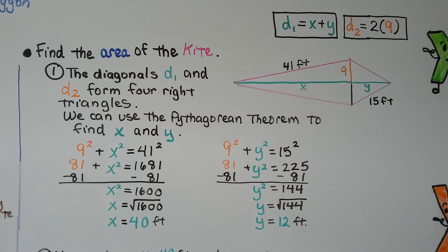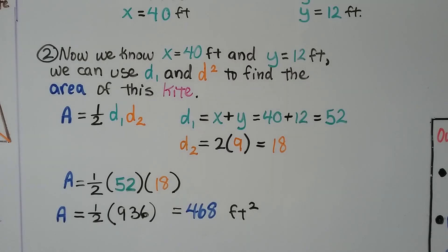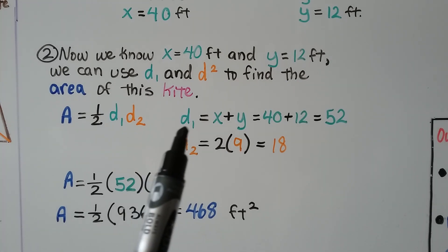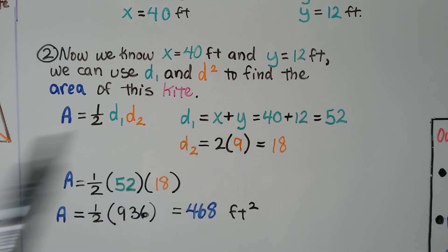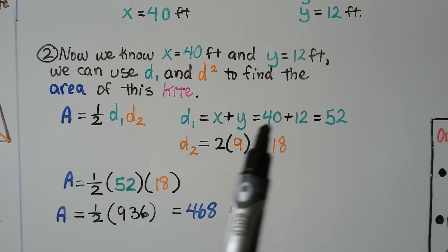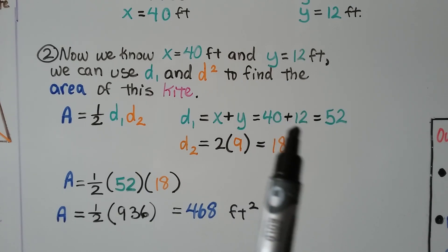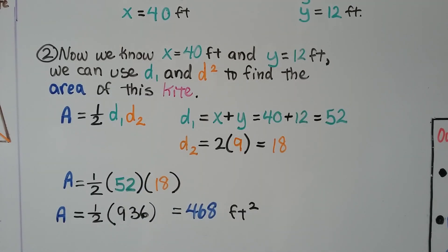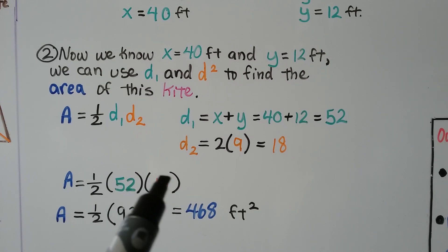But we're not done — we're trying to find the area of the entire kite. Now that x equals 40 feet and y equals 12 feet, we can use d sub 1 and d sub 2 to find the area. D sub 1 equals x plus y, so 40 plus 12 equals 52. D sub 2 was 2 times 9, so 18. Area equals half times 52 times 18, which is half times 936, giving us 468 feet squared.